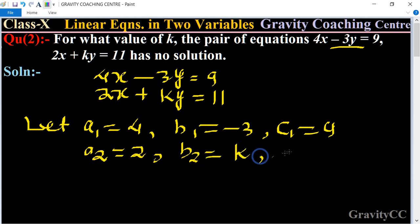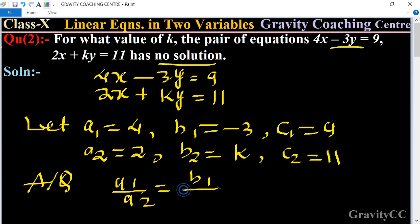And c2 equal to 11. According to the question, these equations have no solutions. So in this case we can write a1 upon a2 equal to b1 upon b2 not equal to c1 upon c2.